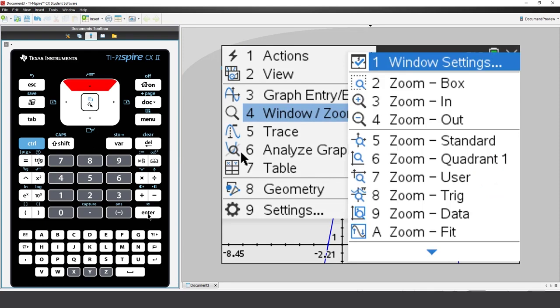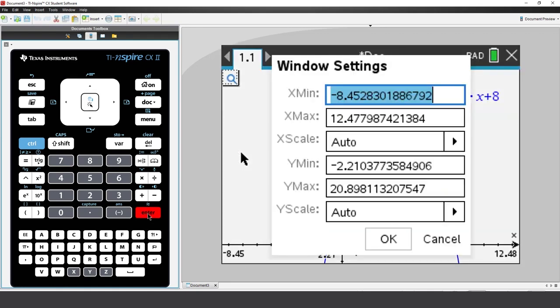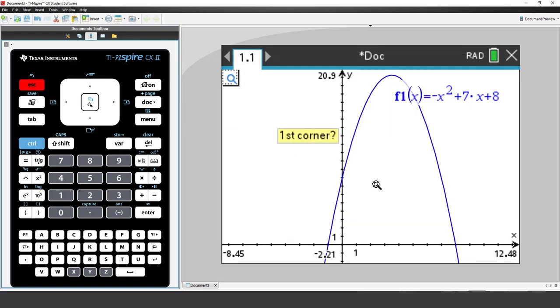Now let's explore how to adjust the Window Zoom settings directly. This can be done through the Window Zoom menu or by editing the corresponding values on the screen directly.